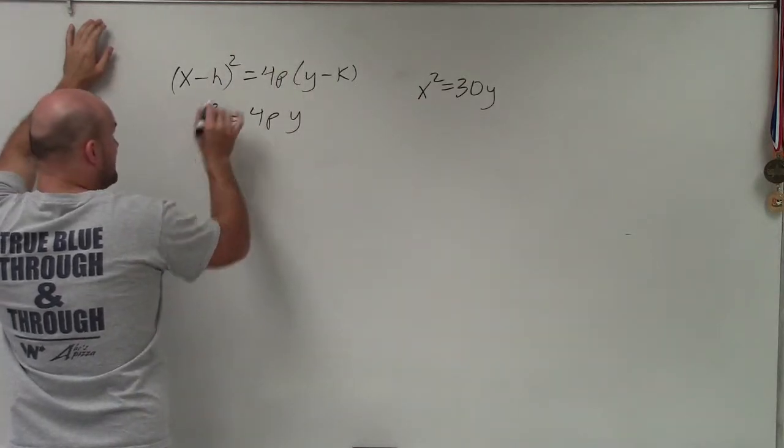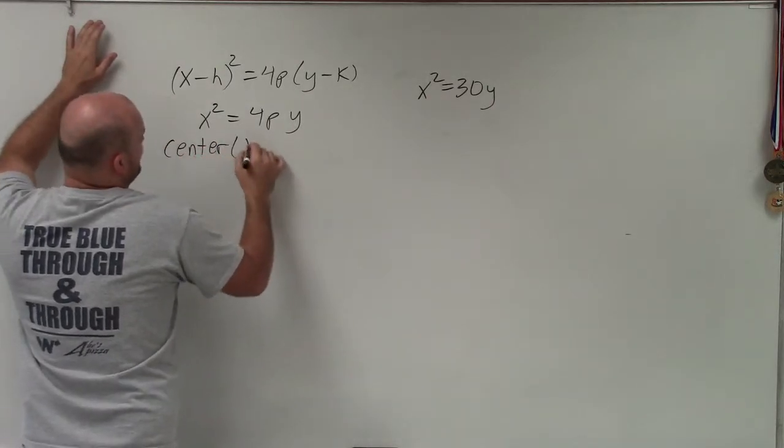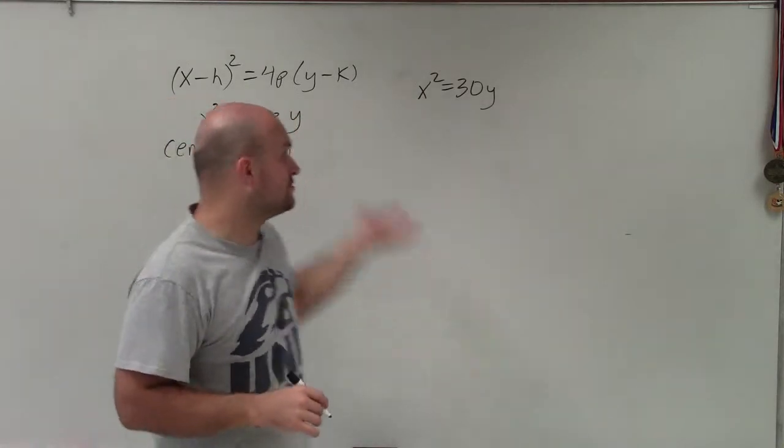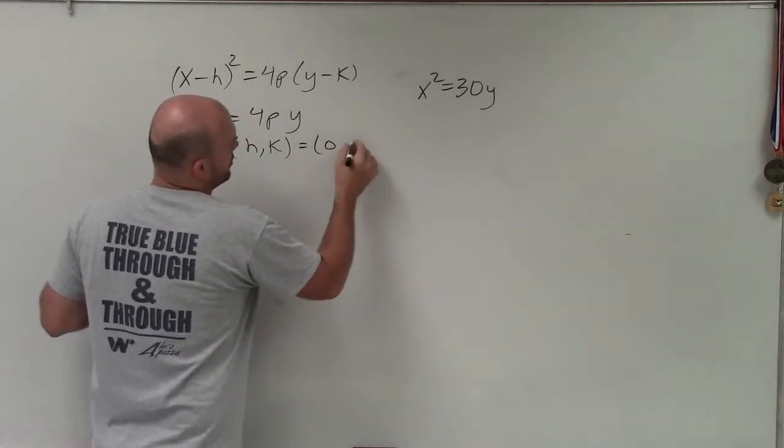Now what's important about this: since I don't have an h and a k in my example, we need to understand what exactly h and k are. Well, h and k are the coordinates for the center. Since we don't have them explicitly, it's actually just (0, 0).